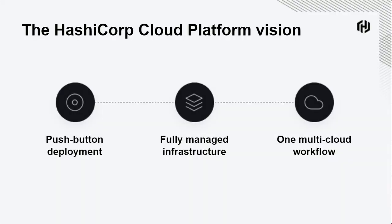The general vision, when you look at HashiCorp Cloud Platform as a whole, is a platform that hosts our tools. It's all going to be about push-button deployment. I literally just hit create cluster and I'm ready to go. This is fully managed infrastructure. The cluster I'm deploying into is in the HashiCorp virtual network, which is basically a private VPC that we host and maintain, with people monitoring for you. You no longer have to worry about handling the complexity of scaling up or scaling down. Right now everything's on AWS, but as we add additional clouds, it's going to be one multi-cloud workflow.